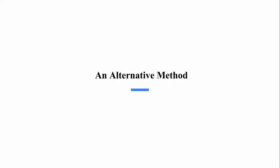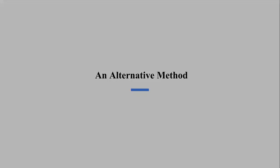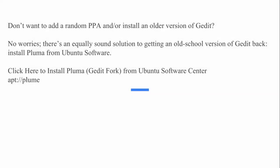There is also an alternative method for installation. If you do not want to add any random PPA or install an older version of GEDIT, just no worries. There is an equally good solution for getting a previous version as well — just install Pluma from the Ubuntu Software Center.